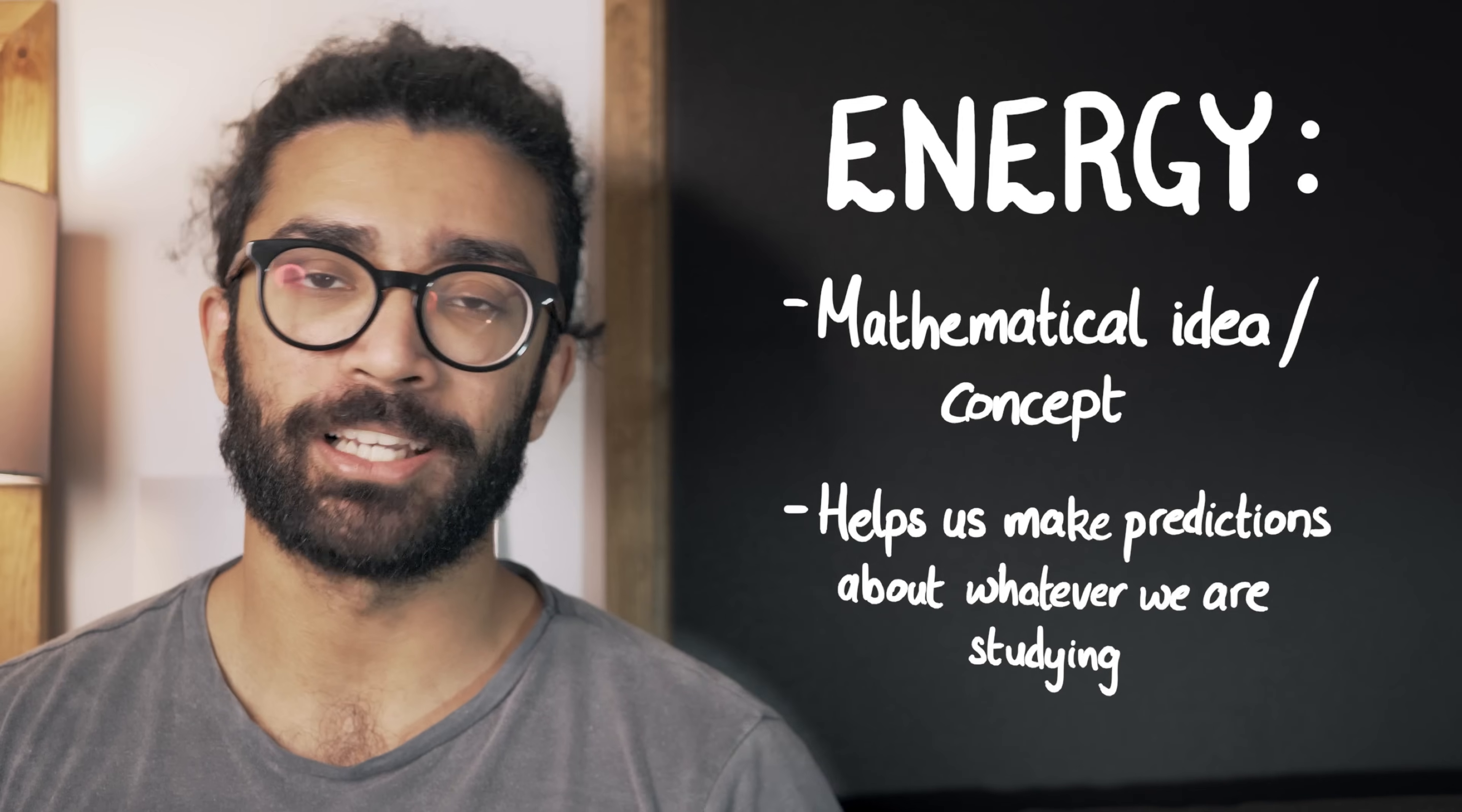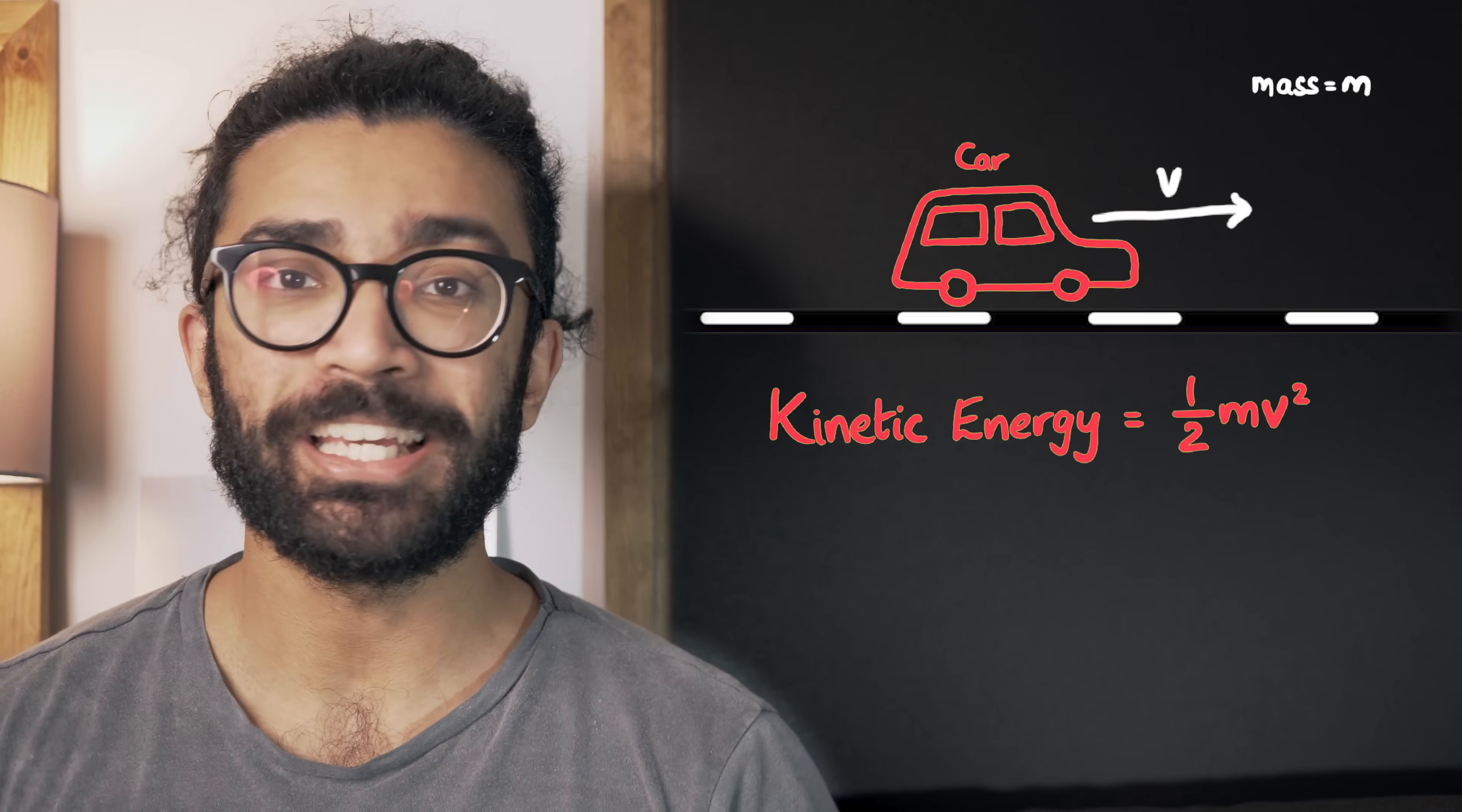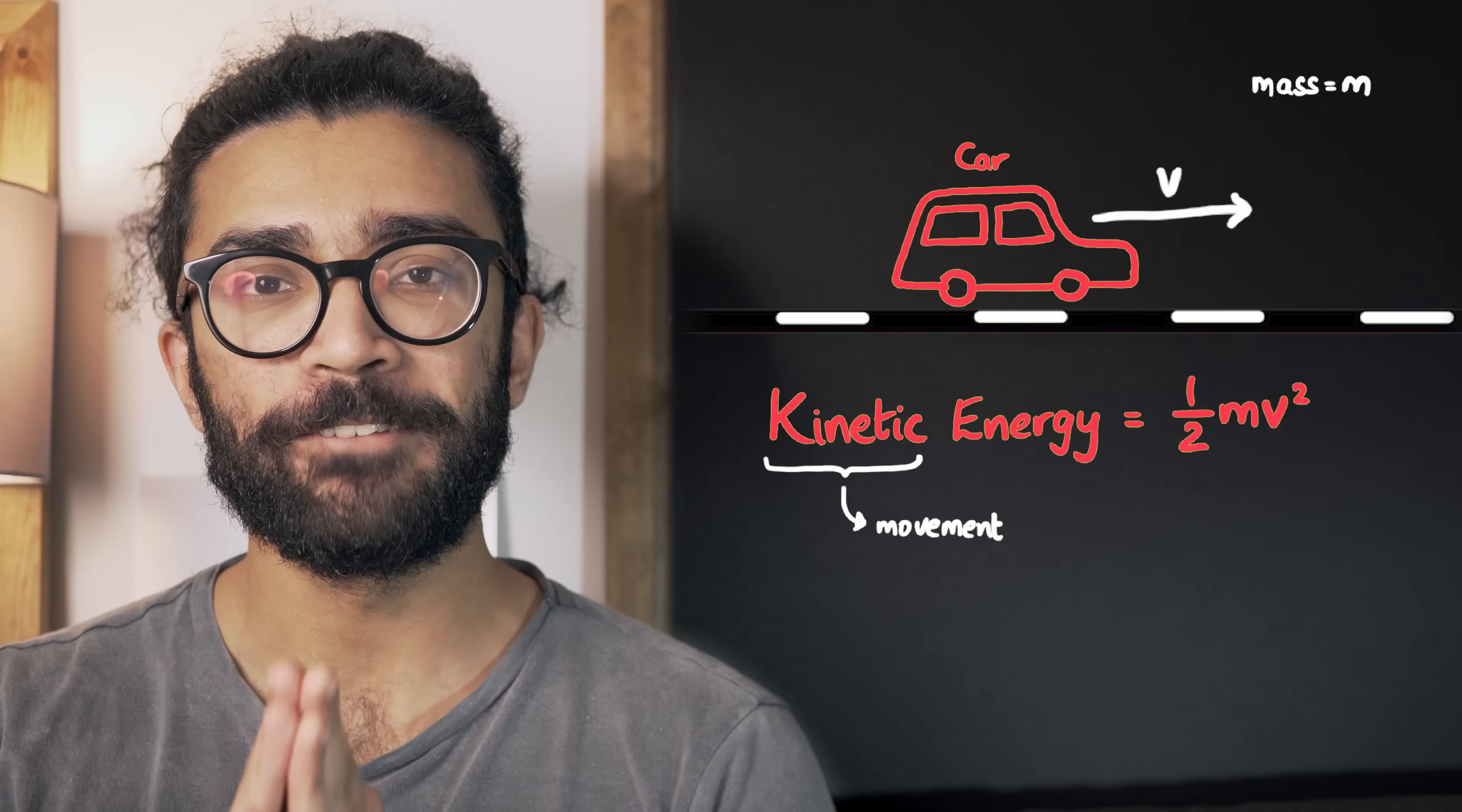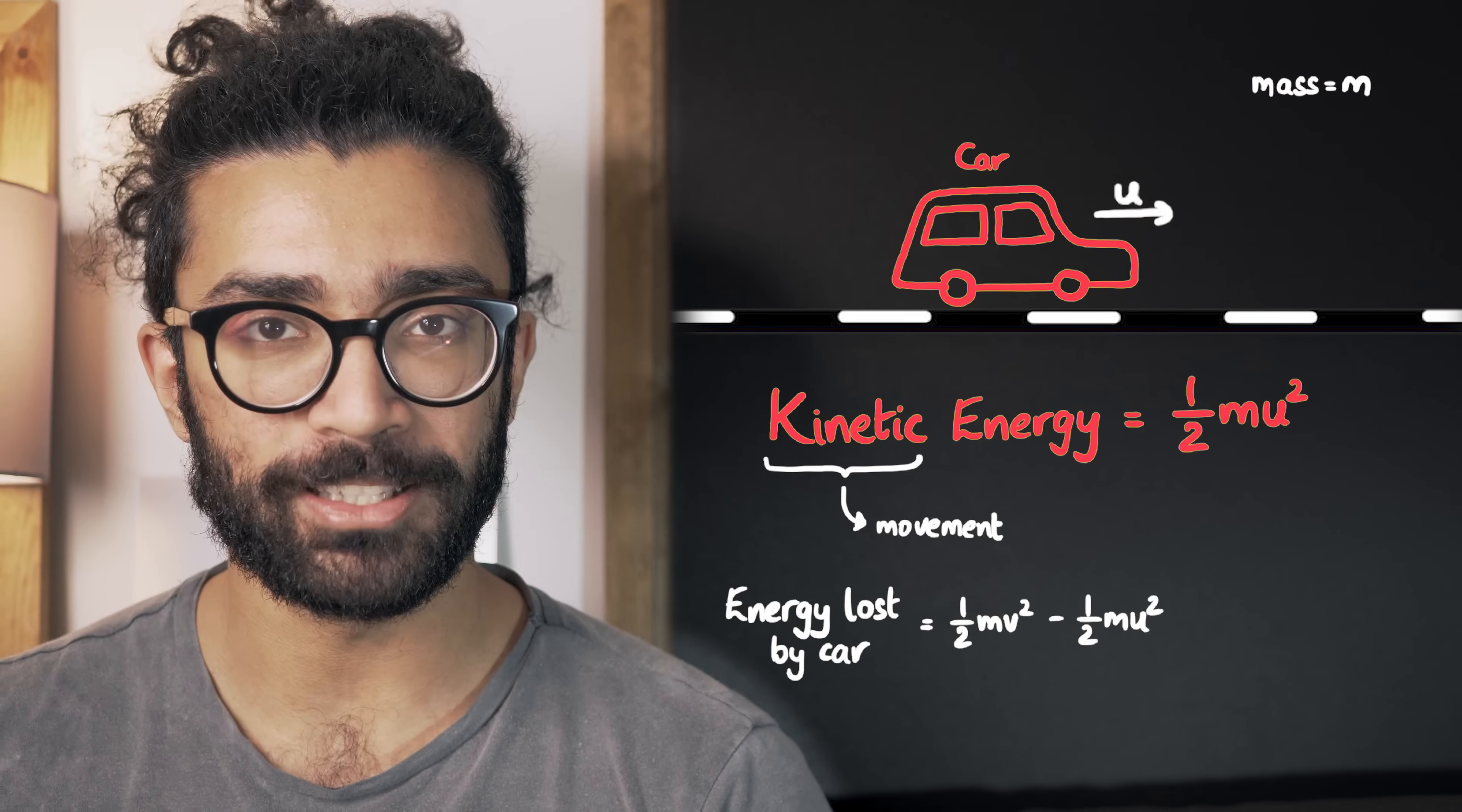Say, for example, we're studying something like a car moving along a road. We can assign it a particular amount of energy based on the kinetic energy equation. This happens to be a carefully calculated equation that will allow us to predict what will happen to the car and its surroundings if something were to change. For example, if the car were to slow down, if its speed were to decrease, then its kinetic energy would decrease as well.